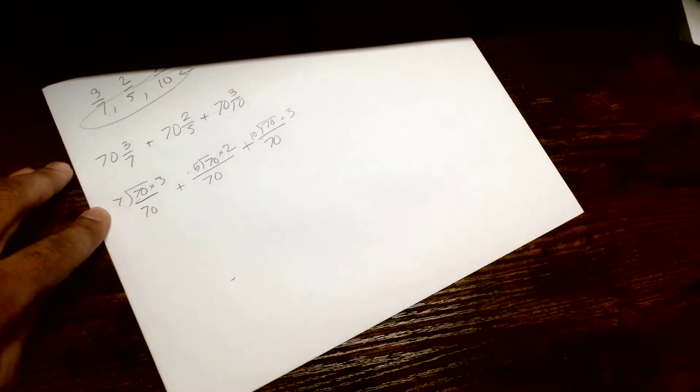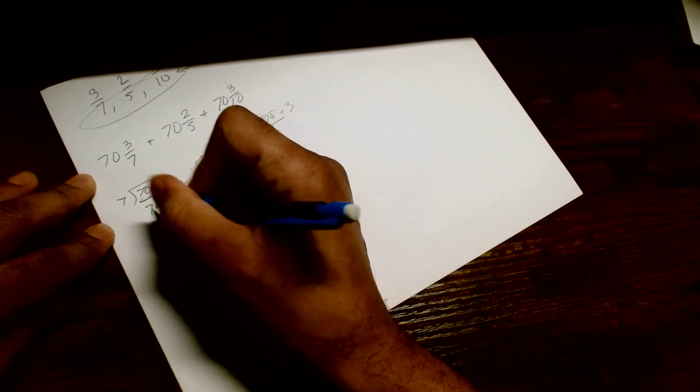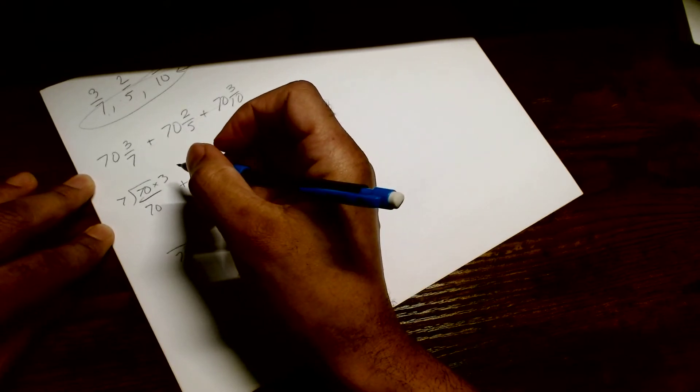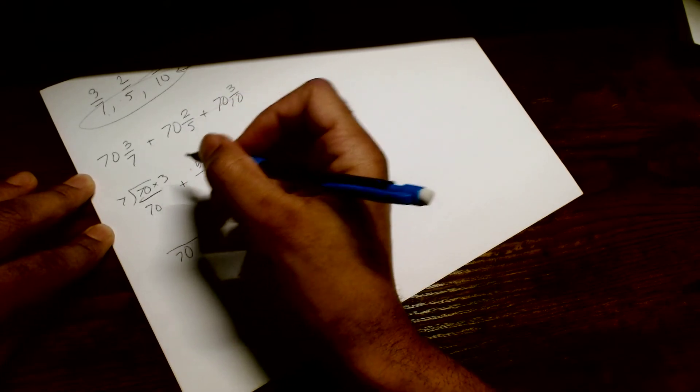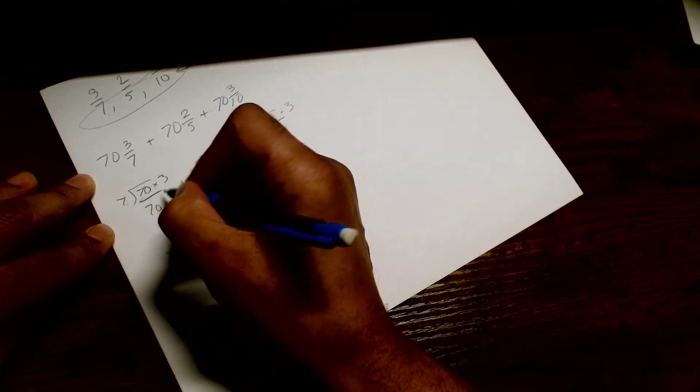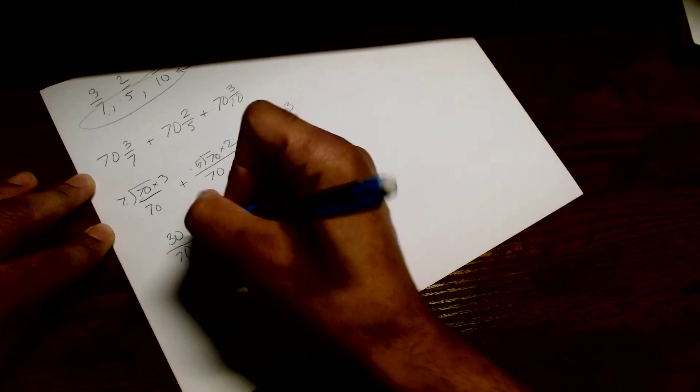So now, let's add all this crap together. So that's going to give us 70. 7 going to 70. How many times? 7 going to 70. 10 times 3. That's 10 times. So 7 going to 70. 10 times 3. That's going to give us 30. 30 over 70.